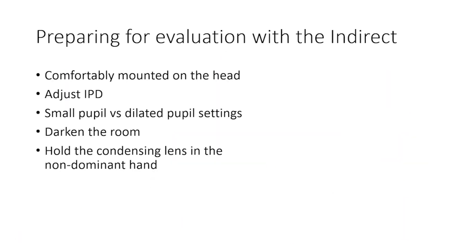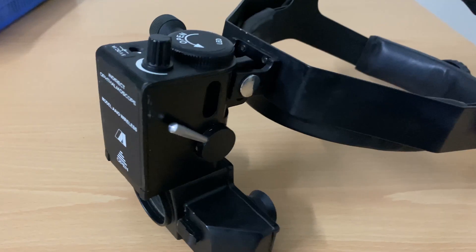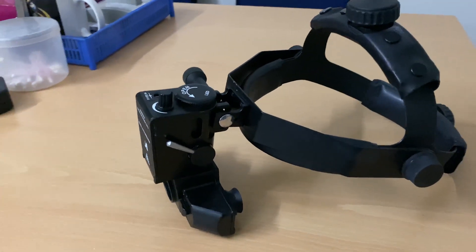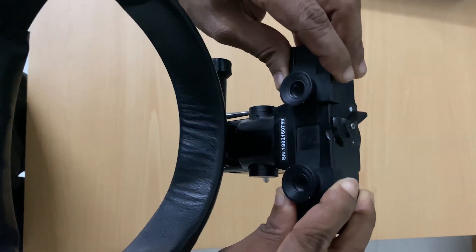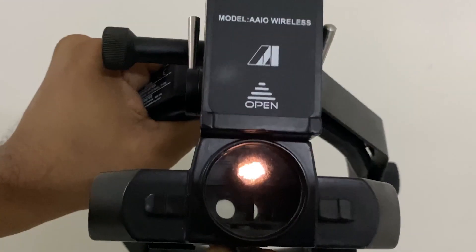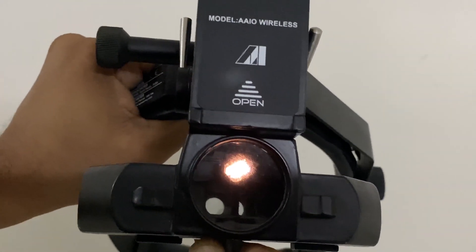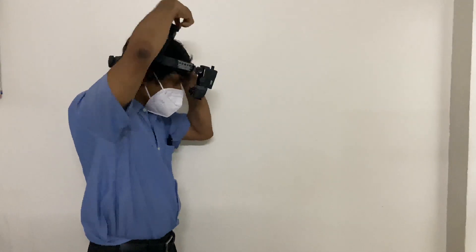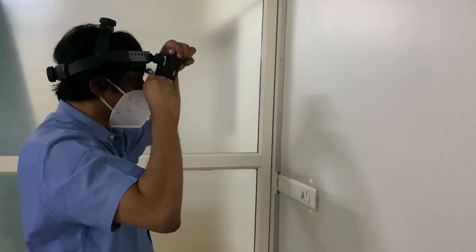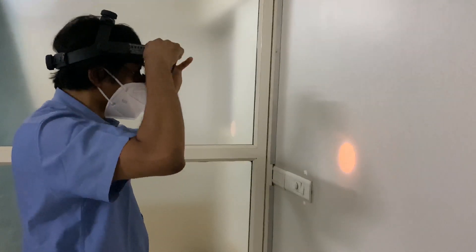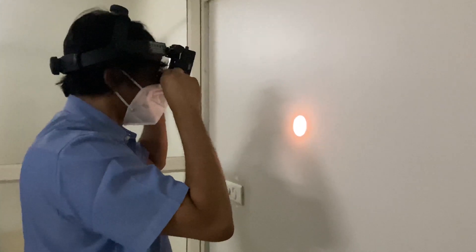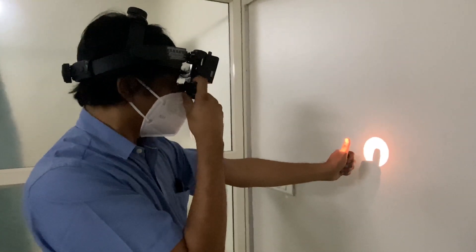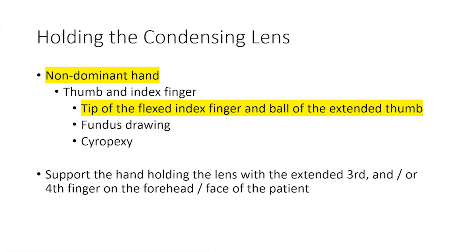Preparation is as important as the examination technique. The indirect ophthalmoscope should be mounted comfortably on the head with most of its weight resting on the top band rather than tightening the circumferential band. The IPD can be adjusted using the sliding eyepieces. Then switch on the indirect and shine the light onto the wall or the tip of the examiner's extended thumb to ensure the light centers in the field of view at that distance. One eye and then the other should be closed to check this, adjusting the interpupillary distance as needed.